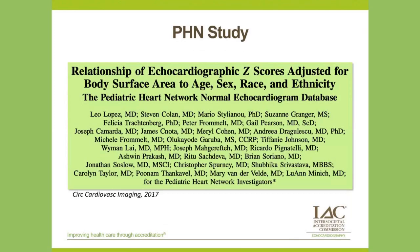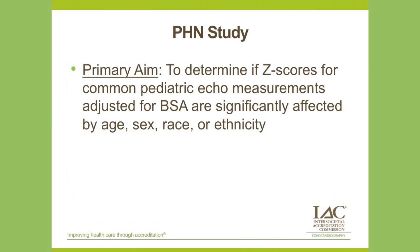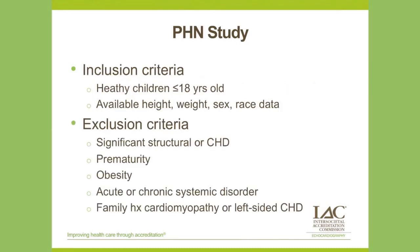In the last few minutes, I'll talk about our recent Pediatric Heart Network study to develop a new Z-score database in a multicenter structure with a very large sample size, accounting for the effects of age, sex, race, and ethnicity. Our primary aim was to determine if Z-scores for common pediatric echo measurements adjusted for body surface area are significantly affected by age, sex, race, or ethnicity. Healthy children with available height, weight, sex, and race data were eligible for enrollment. We also collected ethnicity data — Hispanic versus non-Hispanic — when available.